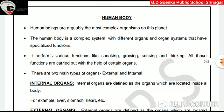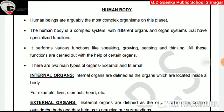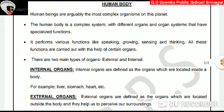Now, let us learn about the human body. Human beings are arguably the most complex organisms on this planet. The human body is a complex system with different organs and organ systems that have specialized functions. It performs various functions like speaking, growing, sensing, and thinking. All these functions are carried out with the help of certain organs.